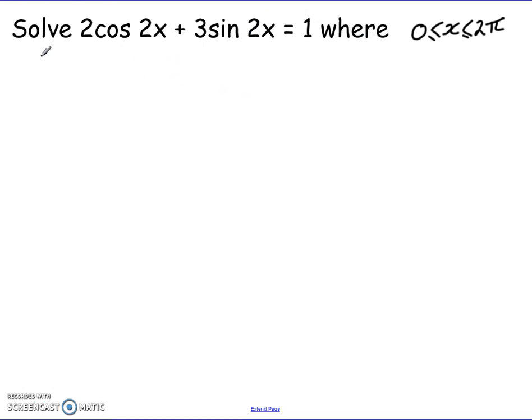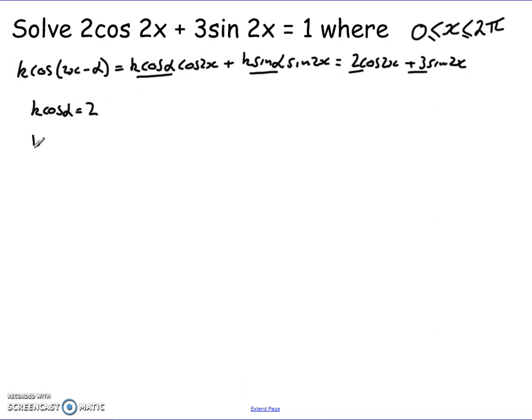The only difference being in this case, what I'm going to rewrite this one as is in the form k cos of 2x minus alpha. Because there's a 2x here and a 2x here, keep it as 2x in there. So it's going to be k cos alpha cos 2x plus k sin alpha sin 2x. And I know I'm looking to rewrite my function in that form. So 2 cos 2x plus 3 sin 2x, I want to rewrite it in that form. Equate the coefficients. So I know k cos alpha equals 2. I know k sin alpha equals 3.